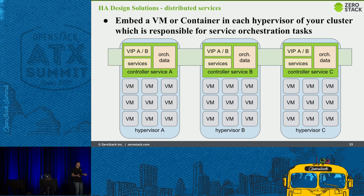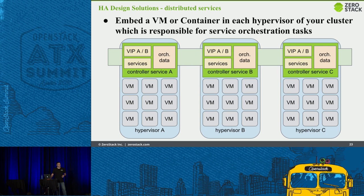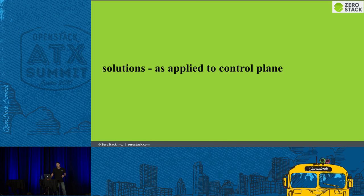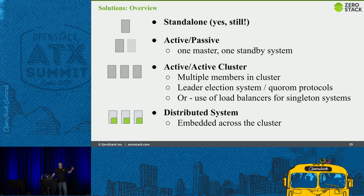The more complex systems get, the more things can fail. There are also solutions where you architect clusters with an embedded control plane — your control plane distributed throughout the actual data plane where VM workloads are running. We'll talk more about that. It's something we do at ZeroStack and it may or may not be applicable for some of you.